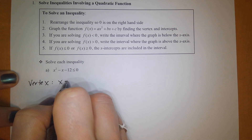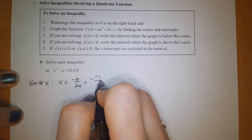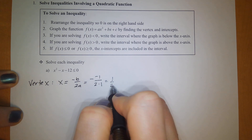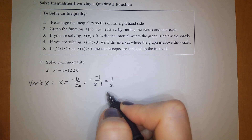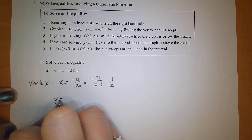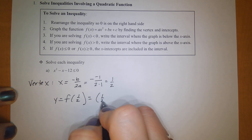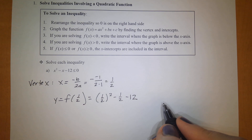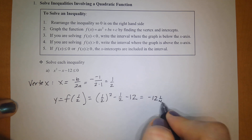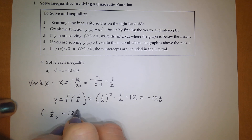The vertex x-coordinate is located at negative b over 2a, which is negative negative 1 over 2 times 1, giving us 1 half. Once we find the x-coordinate, we find the y-coordinate by evaluating f of 1 half. That gives us 1 half squared minus 1 half minus 12, which equals negative 12 and a quarter. So my vertex is located at (1/2, −12¼).